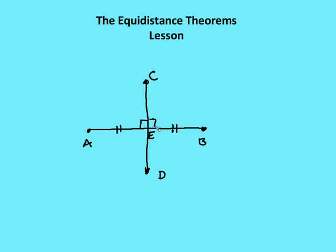And it also forms a right angle with AB. So I know angle AEC, angle CEB, angle DEB, and angle AED are all right angles. I know that AE and EB are congruent. So that's a perpendicular bisector.